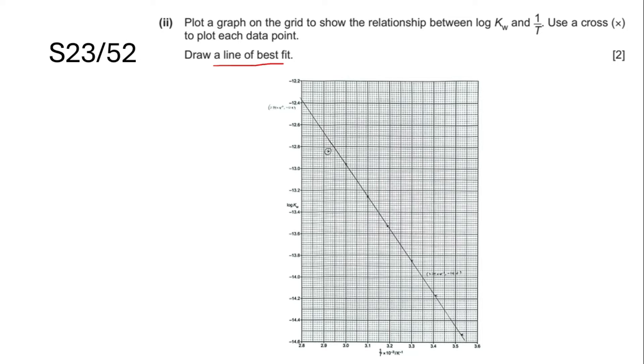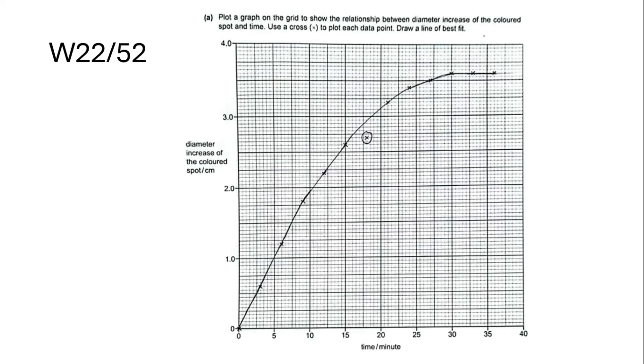But I realized that if I go slightly further to a winter 2022 paper, which is not very far away, like less than two years ago, it says a line of best fit and turns out that the graph is a curved line. So that is the inconsistency that I was talking about.